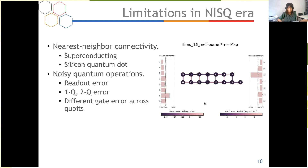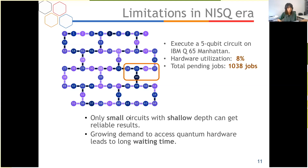Due to these hardware limitations, only small circuits with shallow depth can be executed reliably. If we execute a five-qubit circuit on a 65-qubit chip, the hardware utilization is only 8% — most qubits are wasted. As quantum computing becomes more popular, there is growing demand to access hardware, leading to long waiting times. For example, at the time I submitted a job, there were more than 1000 jobs pending. So here comes a timely issue: how do we use quantum hardware more efficiently while maintaining output fidelity?